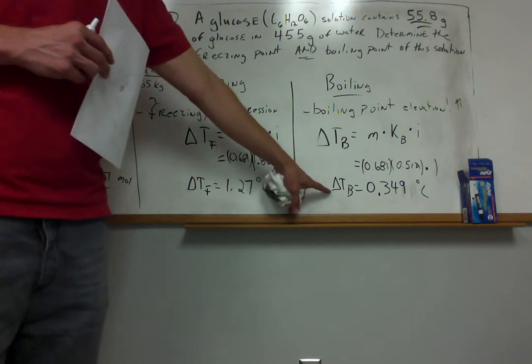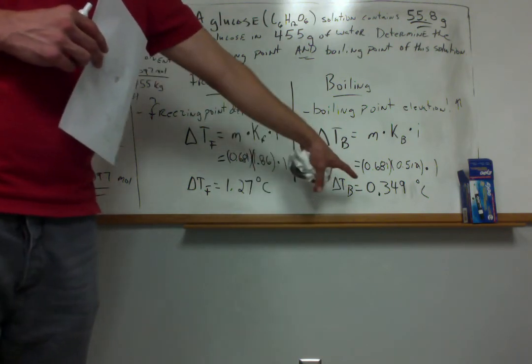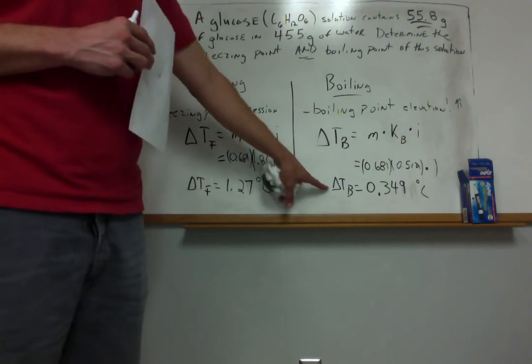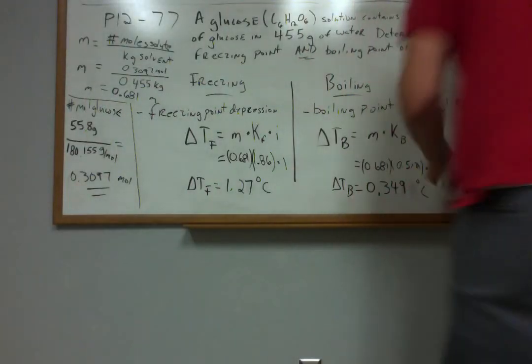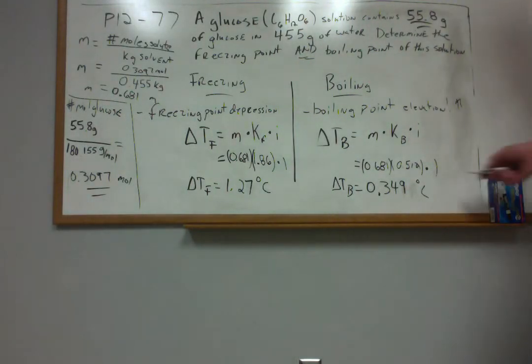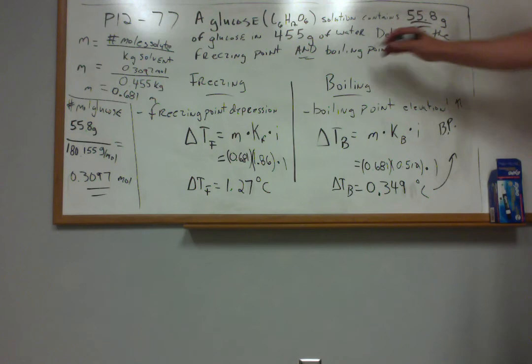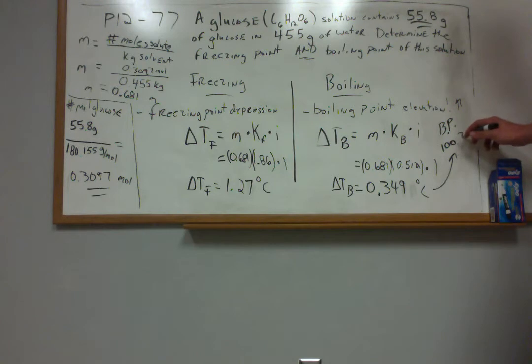So when I compute the change in boiling point to be 0.349 degrees Celsius, what that means is that my boiling point is going to be elevated by this quantity. It's going to go up by that quantity or raised by that quantity. So if I'm going to predict my new boiling point for this solution, considering this boiling point elevation, I would say that my expected temperature of boiling is now 100.349. Well, this is just the change, the raise in boiling point and how much it goes up. So that would be my answer for expected boiling point.